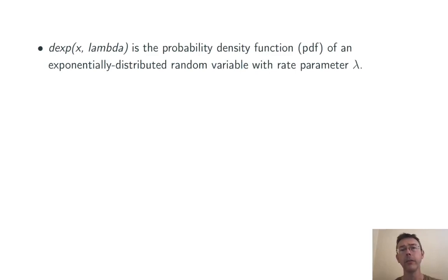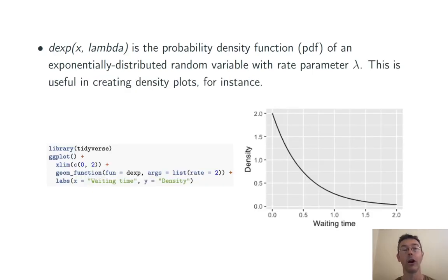Finally, dexp. This is the probability density function, or PDF, of the specified exponentially distributed random variable. This is generally used for theoretical purposes. You don't use it for calculations quite as much unless you need to draw a density plot. So, for instance, here's some code to draw a density plot for the exponentially distributed random variable that we've been looking at over the last few slides.